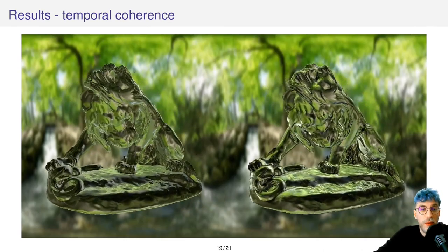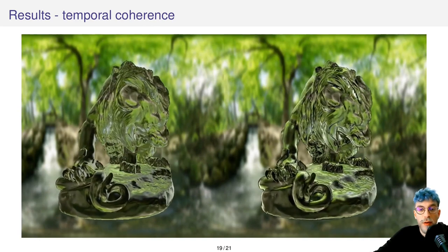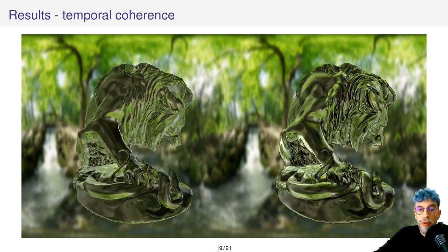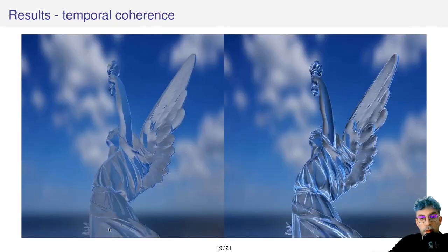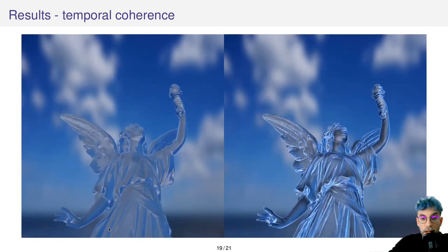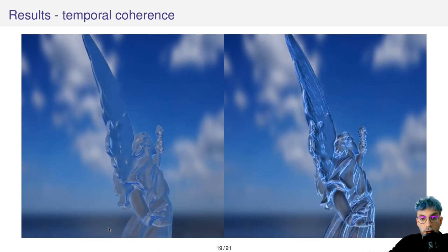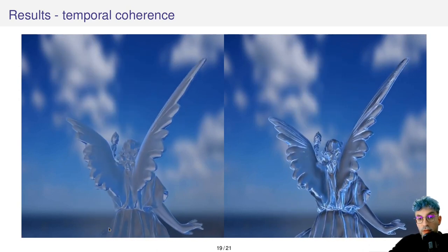Our technique also achieves temporal coherence, as you can see in this video. Here we use the coarse scales to enhance the highlights and the fine scales to enhance refractions. Here we do the opposite, by enhancing fine scales using the specular component and coarse scales using the transmitted term.